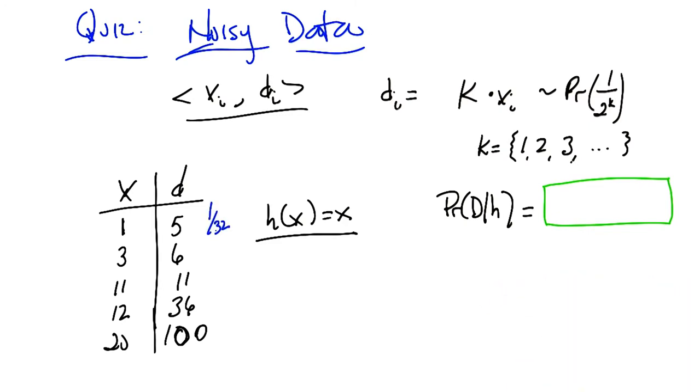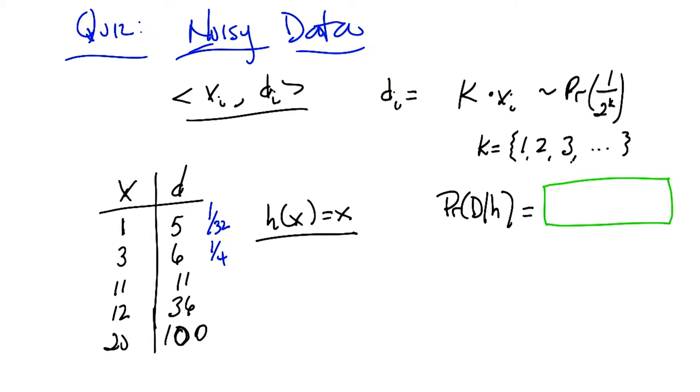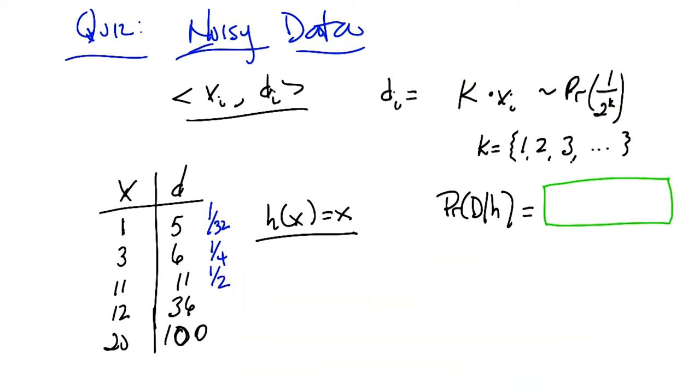And so then I would use that same thought process on the next one, which says that it's doubled, and the way that this particular process would have produced a doubling would be with probability a quarter. Mm-hm. And the next data element would have been produced by this process with probability a half, because k would be 1, and 1 over 2 to the k would be a half.